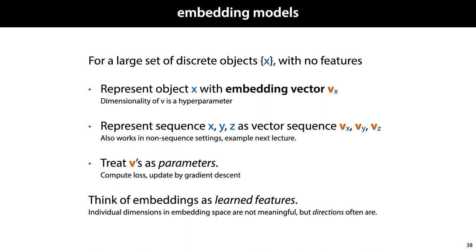You assign a unique vector to each object in your set, and use these vectors to represent the objects you want to learn over. If you're training on a sequence of objects, you turn this sequence of objects into a sequence of embedding vectors, and feed that to your model.